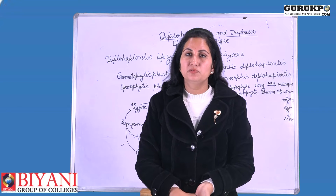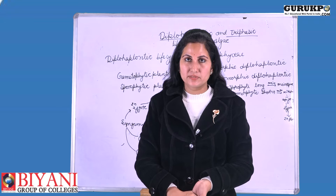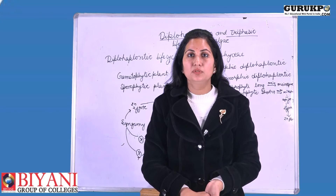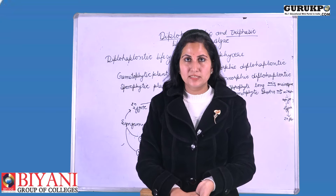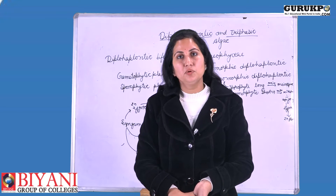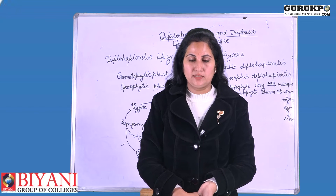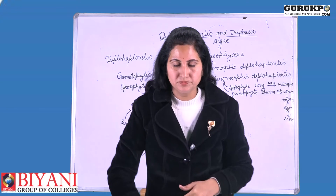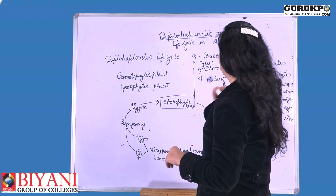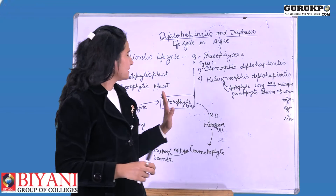In this video lecture, we are going to discuss about the remaining two complex types of life cycle — the haplodiplobiontic type of life cycle and the triphasic type of life cycle. So let us begin with the haplodiplobiontic type of life cycle. Here I have made a diagram as you can see.